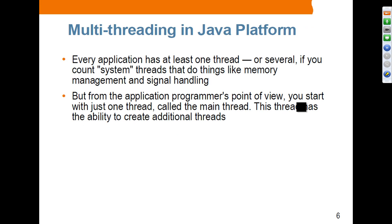Multi-threading support in Java: each application has at least one thread, or several if you count system threads. Even if you are running a very simple Hello World application, it has the application thread and several system threads. So running an application involves multiple threads. But from a developer's point of view, you start with just one thread — the main thread — which is running your main method.